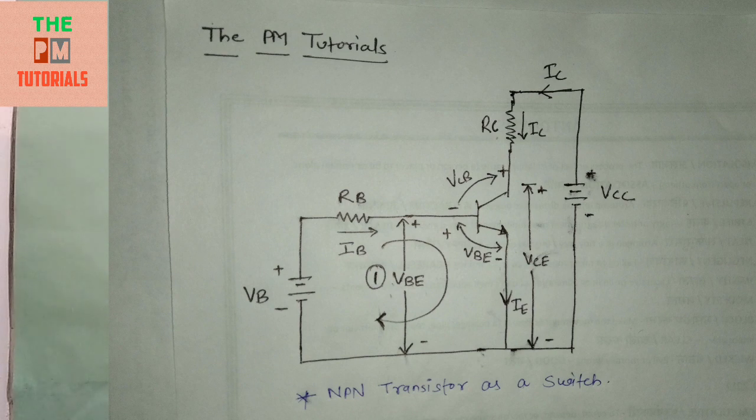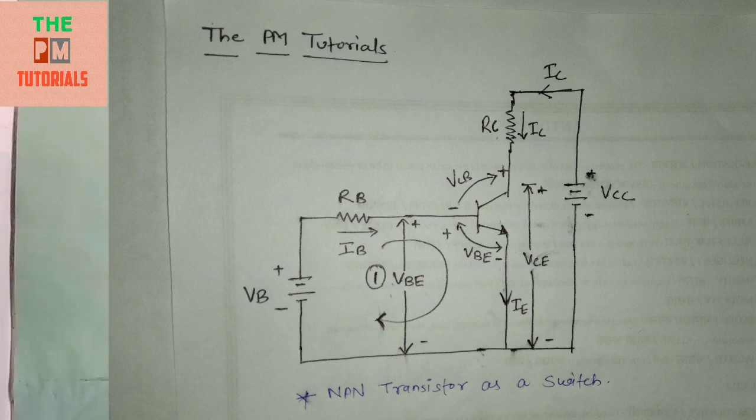Here we are using a transistor as a switch in which a battery VB is connected with the base resistance and the collector resistance with NPN transistor. Accordingly, voltage has been given. We are going to apply KVL rule to decide VCE, VCC, and VCES in this circuit.